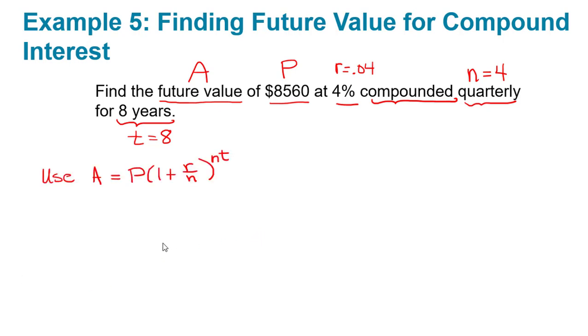Knowing that we're using compound interest, we write down our compound interest formula for the future value, which is A equals P times (1 plus r over n) to the n times t, and we just plug in. So our future value A is going to be the principal 8,560 times (1 plus our interest rate r in decimal form 0.04 divided by the number of compounding periods per year, which is 4), raised to the power of the total number of compounding periods, which is going to be 4 times t, 4 times 8 in this case.